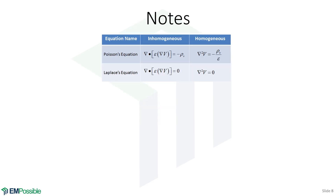Let's summarize what we've done. I like to put these equations in a quad chart. In the top row we have Poisson's equation; in the bottom row, Laplace's equation. In the second column we have the equations for inhomogeneous media where permittivity is a function of position, and in the last column the equations for homogeneous media. It's this last one — Laplace's equation for homogeneous media — that we tend to solve most of the time in electrostatics, and what we'll be doing in this course.